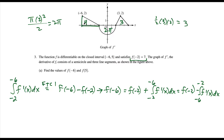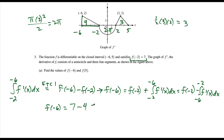Now I'm going to mark off the x-axis: negative 6 over here, negative 2, positive 2, then 3, 4, 5. We can simplify: f(-6) equals f(-2), which they told us is 7, minus the integral from -6 to -2, which is the area under f' from -6 to -2 — we already found that equals 4. So f(-6) = 7 - 4 = 3.